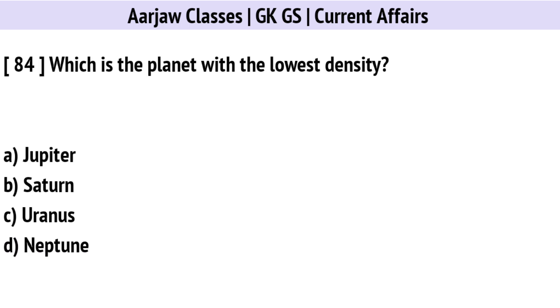Which is the planet with the lowest density? Correct option is B: Saturn.